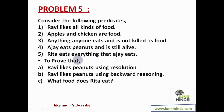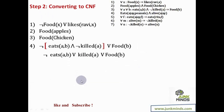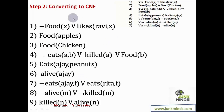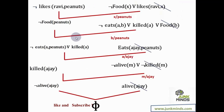We need to prove that Ravi likes peanuts using resolution, Ravi likes peanuts using backward reasoning, and what food does Rita eat via question answering. I'm not going to spend much time on step one since it's exactly the same as before — I'll quickly take you through it. I've converted all the given information to predicate logic and then to CNF, and taken the negation of the conclusion. Resolution is forward reasoning, and this is how I've resolved.